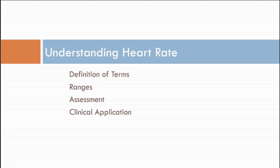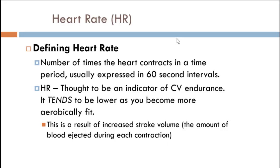Heart rate, unlike respiration and temperature, is something we're going to use quite a bit. The heart rate itself is the number of times the heart contracts in a time period, usually expressed in 60 seconds. It doesn't have to be assessed over 60 seconds — a lot of times people will do a 30-second interval and multiply by 2, or 15 seconds and multiply by 4. The shorter the interval, the more opportunity for error. Doing it for 3 minutes and dividing by 3 gives you an average and is more accurate.